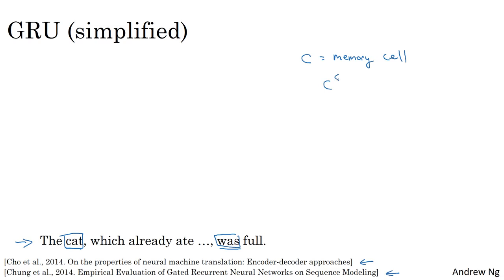At time t, the memory cell will have some value C(t). The GRU unit will output an activation value a(t) that's equal to C(t). I'm using different symbols — C and a — to denote the memory cell value and the output activation value, even though they are the same for GRUs. I'm using this notation because when we talk about LSTMs a bit later, these will be two different values. But for the GRU, C(t) equals the output activation a(t).